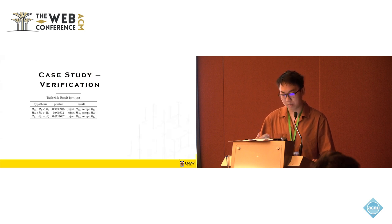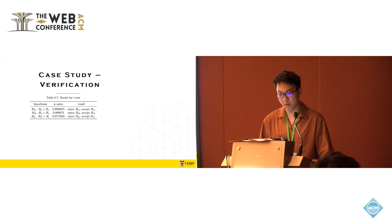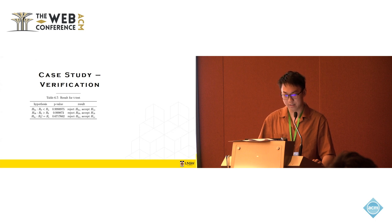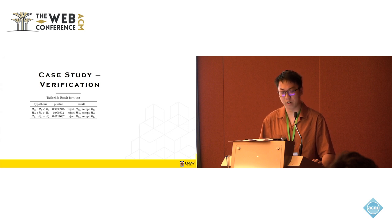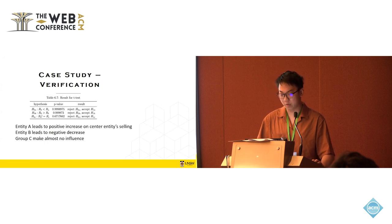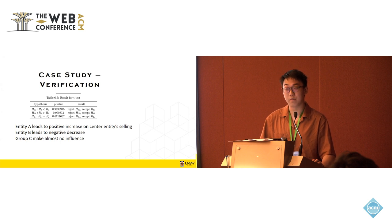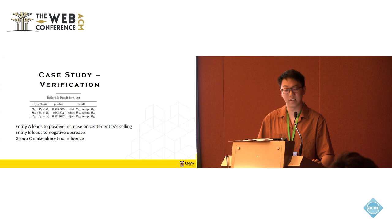And we further run a hypothesis t-test with null hypothesis opposite to what we expect. So actually, from the hypothesis test, the results of the p-value are sufficiently large enough to reject the null hypothesis and accept our assumptions, which shows that the influence in SSTKG indeed has the impact on prediction as expected. From the case study, we can see that entity A, which has a positive influence, leads to a positive increase on center entity selling. While entity B, which has a negative influence, leads to the center entity's selling record after prediction for a negative decrease, while group C entities make almost no influence.